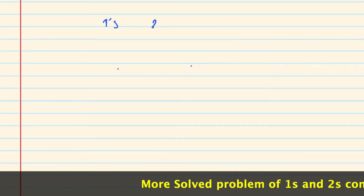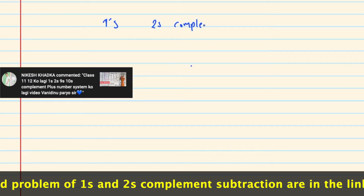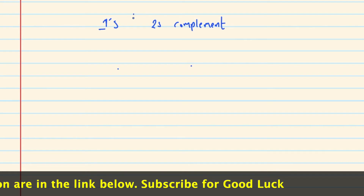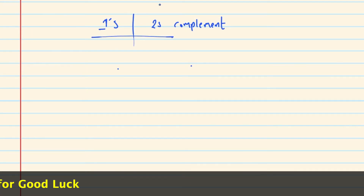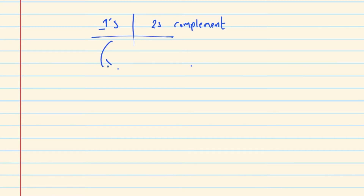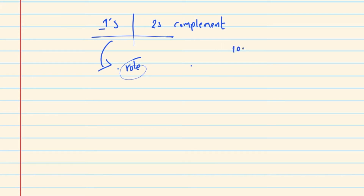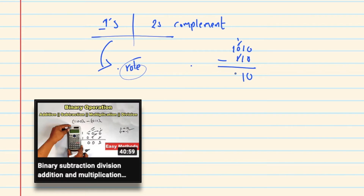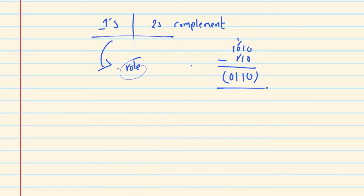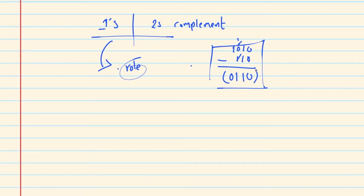In class 11, we will be able to do subtraction. Once the topic is completed, we will be able to get the rules. We will be able to do subtraction in binary. Once a two's complement is used, it is worth 5 marks.